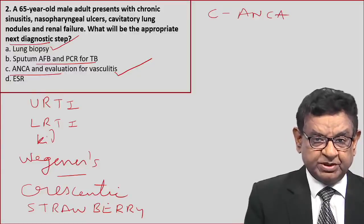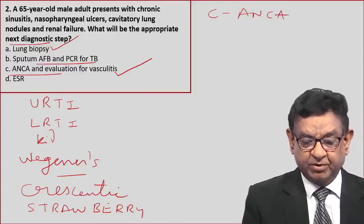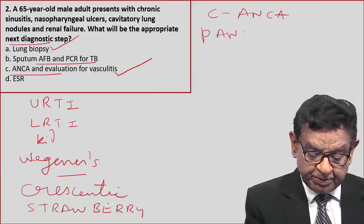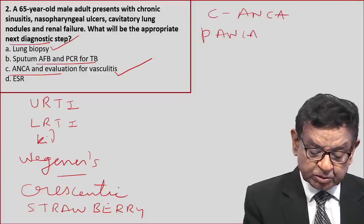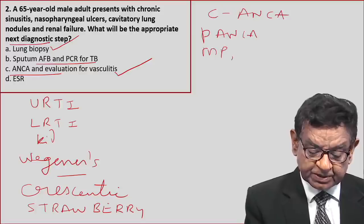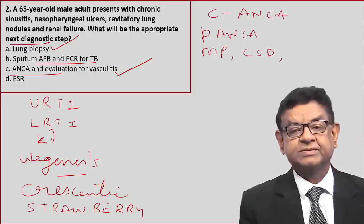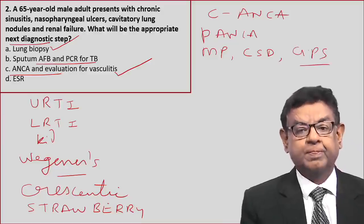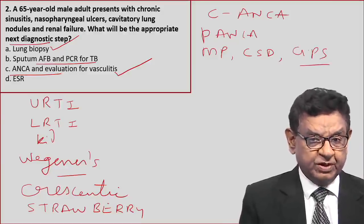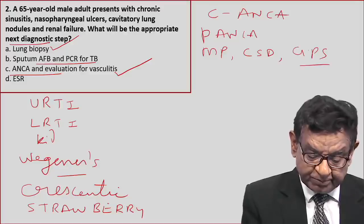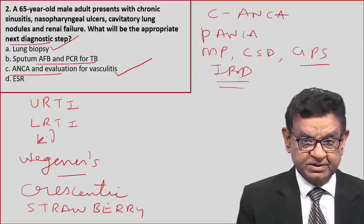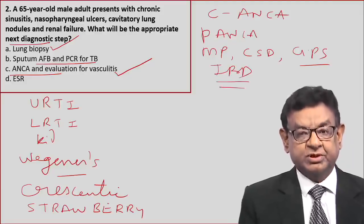An extra edge question: in Wegener's granulomatosis we see C-ANCA antibodies. Now, what are the conditions where we see P-ANCA antibodies? P-ANCA antibodies are seen in microscopic polyangiitis. C-ANCA antibodies are also seen in Goodpasture syndrome. P-ANCA antibodies can also occur in inflammatory bowel disease like ulcerative colitis. This is about question number 2.